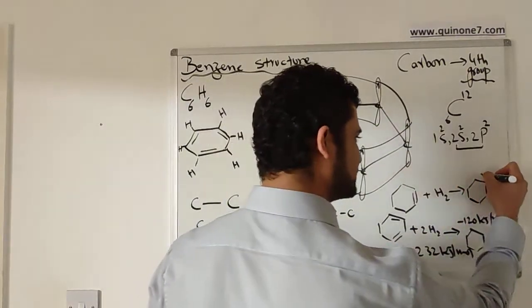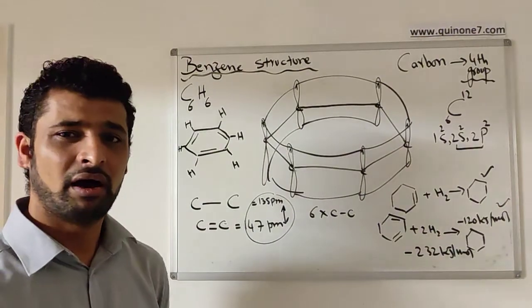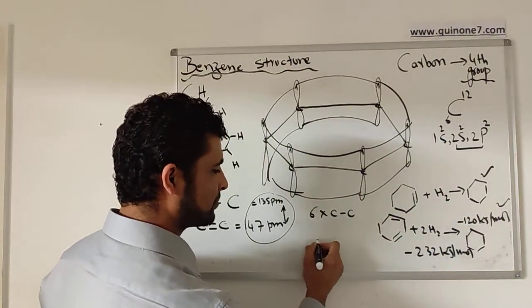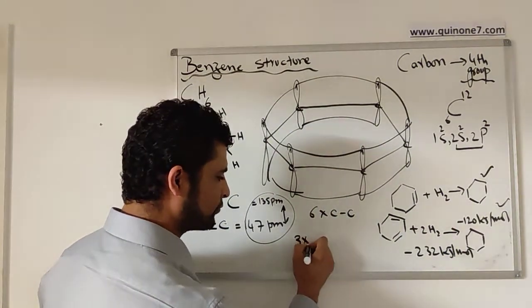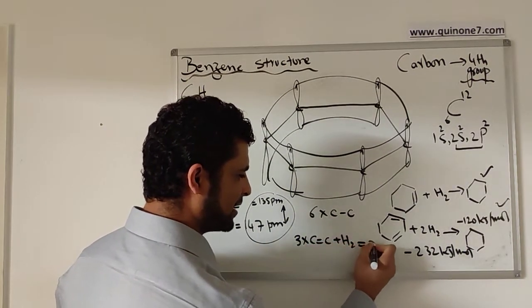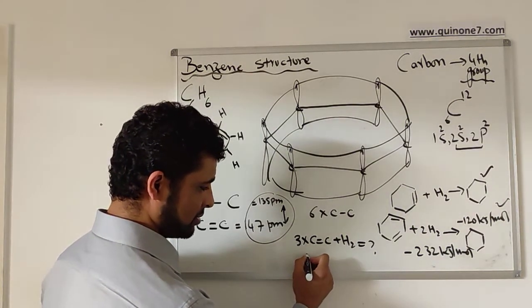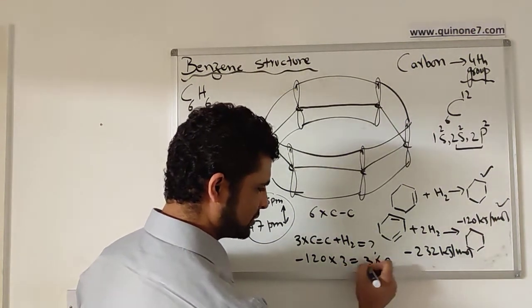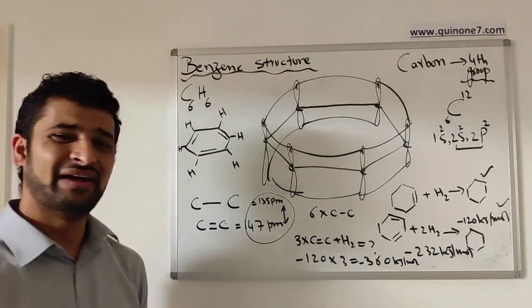If we use this evidence, the benzene doesn't have alternate single and double bonds. If you look at benzene with three single bonds and three double bonds, three carbon to carbon double bonds will take how much energy for hydrogenation? That will be 120 times 3, which will be -360 kilojoules per mole.